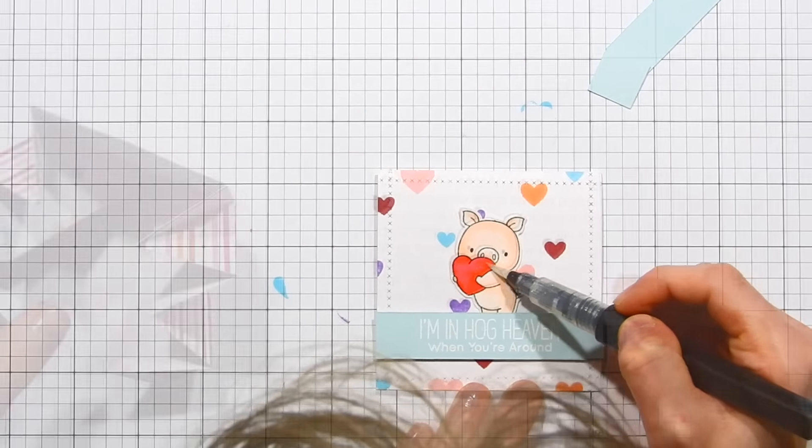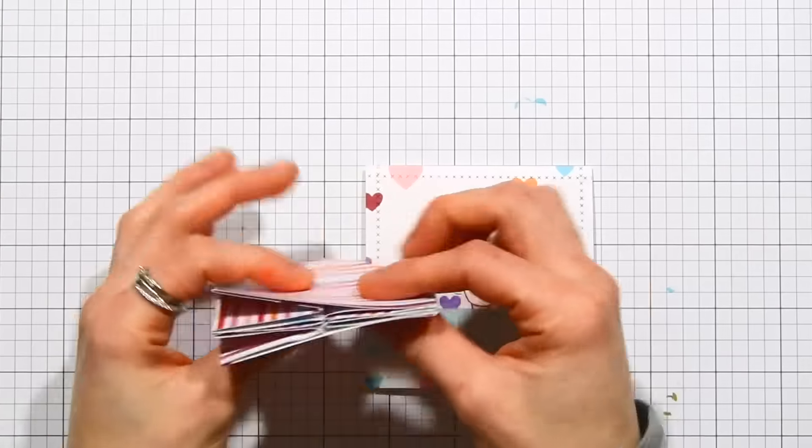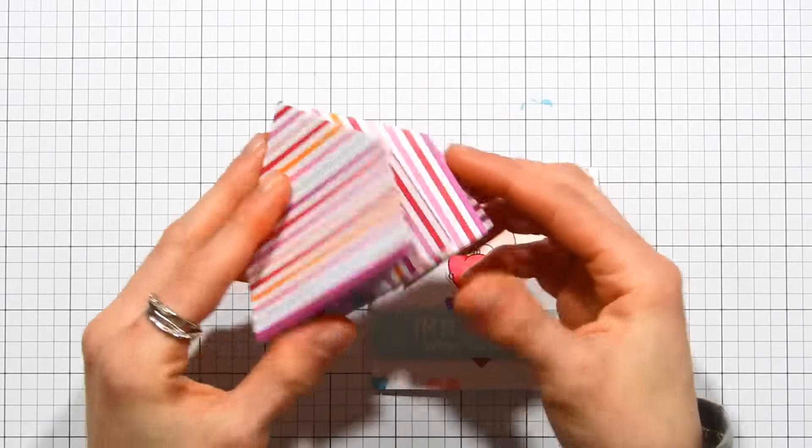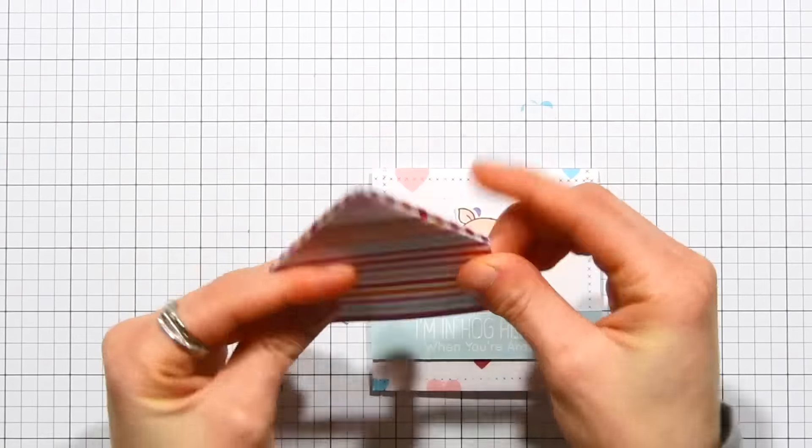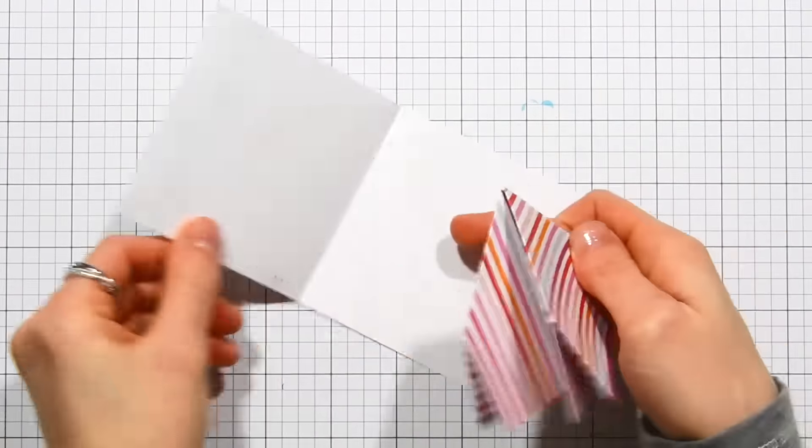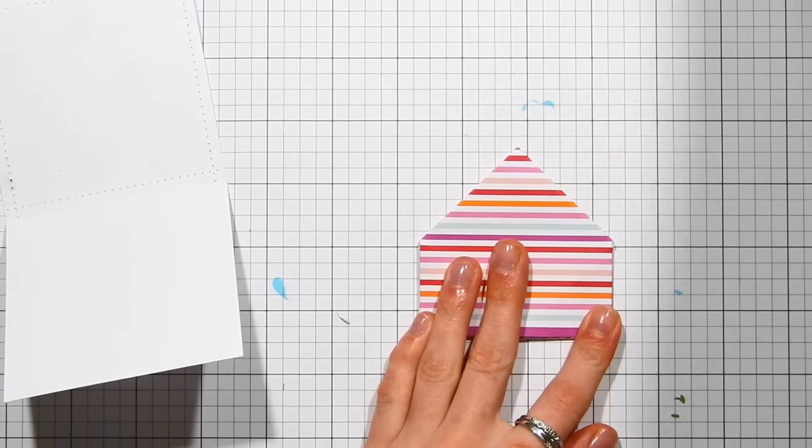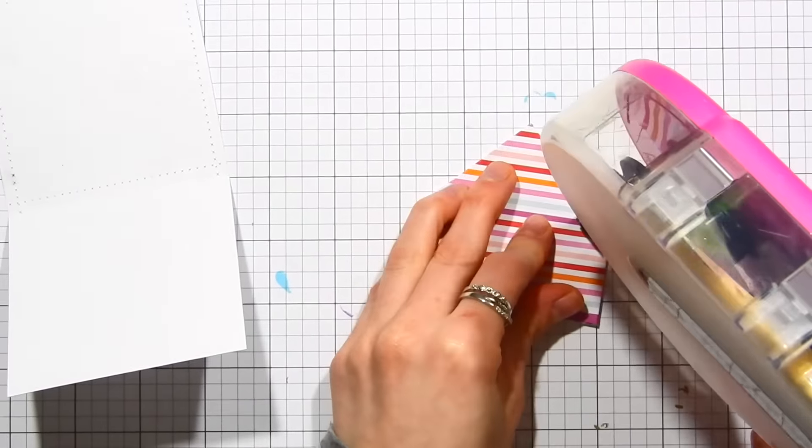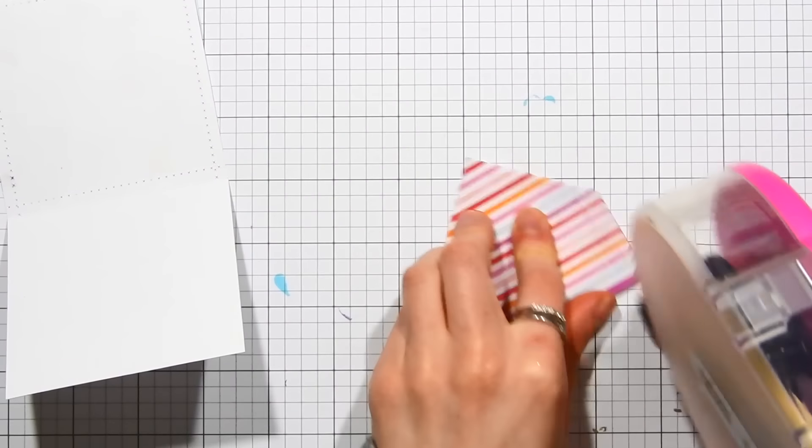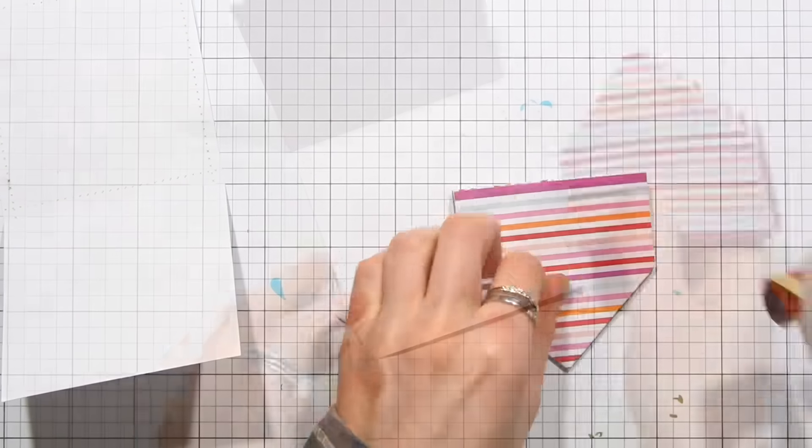Now it's time to put the entire card together. We've got our little pop-up element here, and we're going to now layer this inside of our card. I'm going to take some ATG adhesive and run this along the edges of this pop-up element. You want to put the adhesive on all four sides.